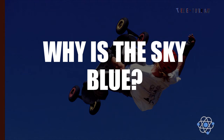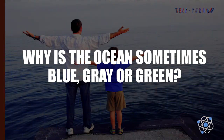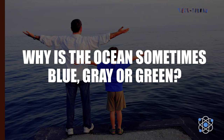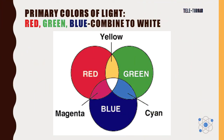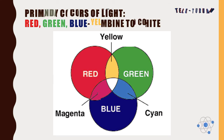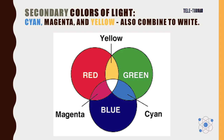Why do we see the colors of the rainbow? Why is the sky blue? Why is the ocean sometimes blue, gray, or green? Primary colors of light include red, green, and blue, and they combine to form white. Secondary colors of light include cyan, magenta, and yellow, and they also combine to form white.